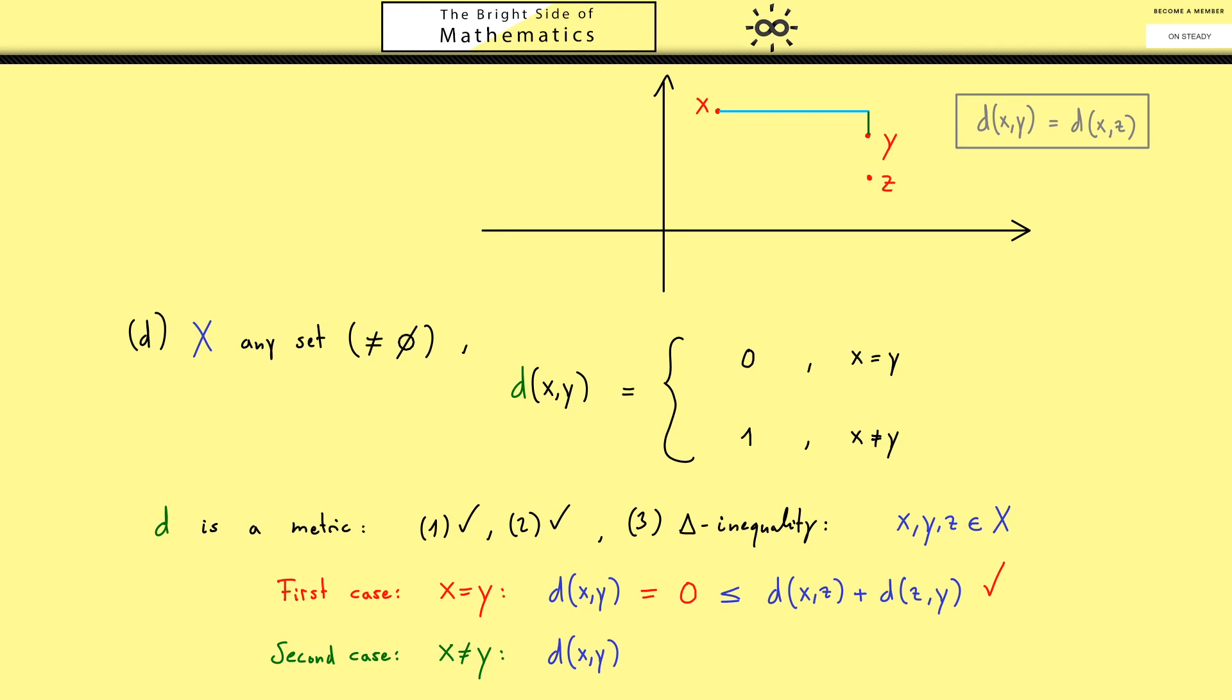Now the second case of course should be the opposite, so we have X is not equal to Y, which means the distance is by definition exactly 1. Now because we know that the only allowed distances are 0 or 1, there's nothing in between, we know that X, Z or Z, Y have also 1 or 0. Or to put it in another way, we know that d(X,Z) or the other one, so d(Z,Y) is also exactly 1. At least one of them has to be 1, otherwise both of them would be 0, which means that Z is equal to X and Z is equal to Y, but then this would be not the second case. However, this means now if we add both of these distances, we will get 1 or in the worst case when both of them are 1, we get our 2, so we have the inequality. So very good, also in the second case, the triangle inequality is fulfilled.